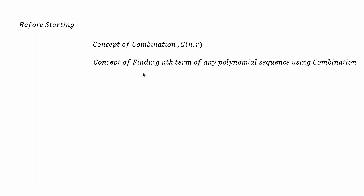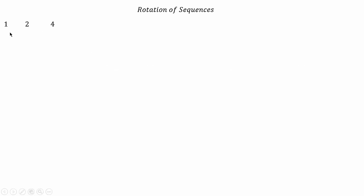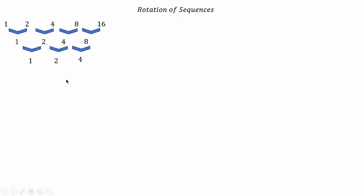Let's get started with some simple intuition. This is a geometric sequence where each term is multiplied by 2. Let's find the differences of consecutive terms: 2 minus 1 is 1, and so on. Finding the differences again and again, what you can see is each term of this pattern is multiplied by 2, but each term in the diagonal elements is multiplied by 1.